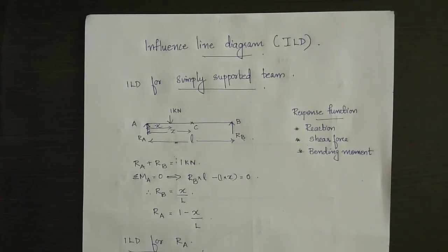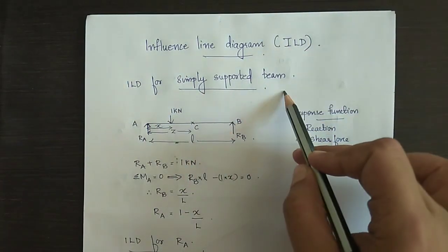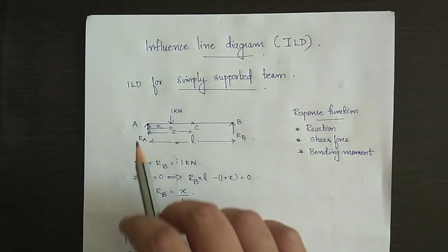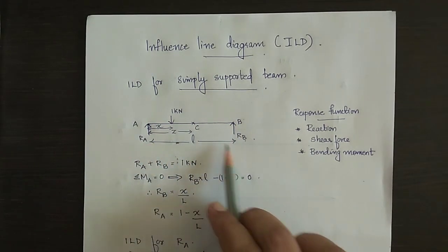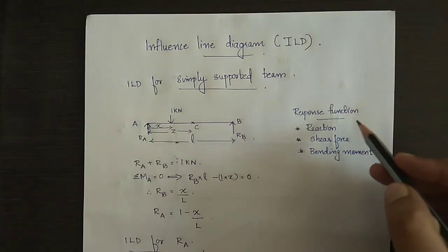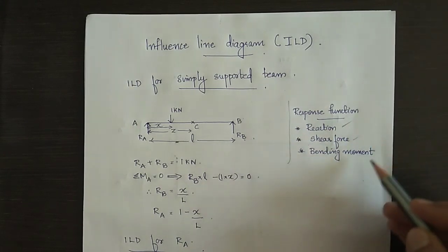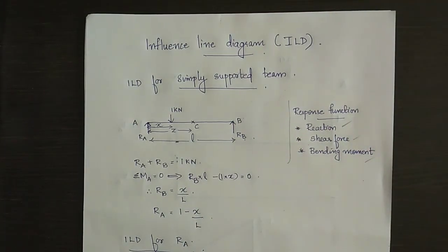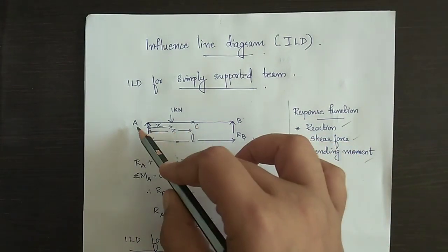Today we are going to deal with the influence line diagram (ILD) of a simply supported beam. Consider a simply supported beam AB of span L meters. We need to find out the response function at a section, which includes reaction, shear force, and bending moment. We are considering a section at a distance Z from the left support A.